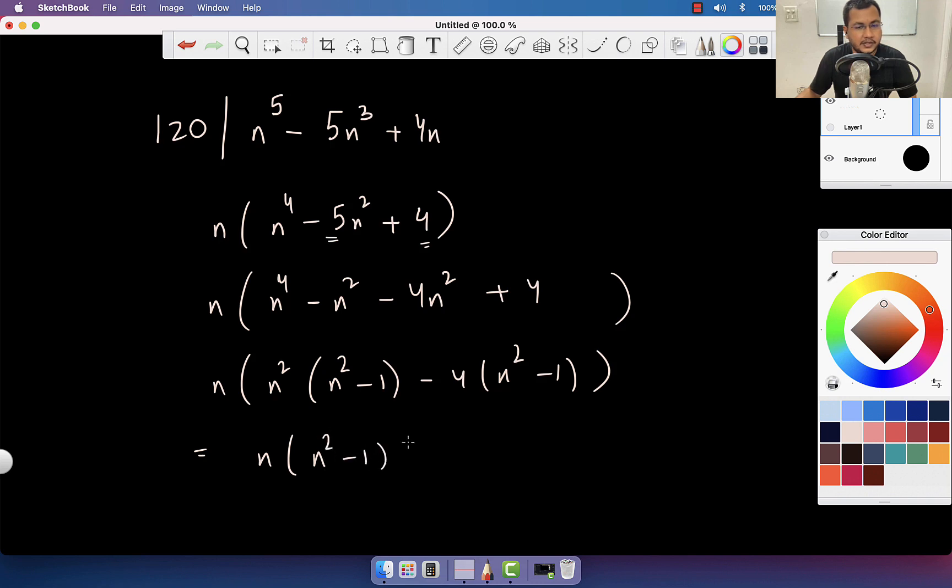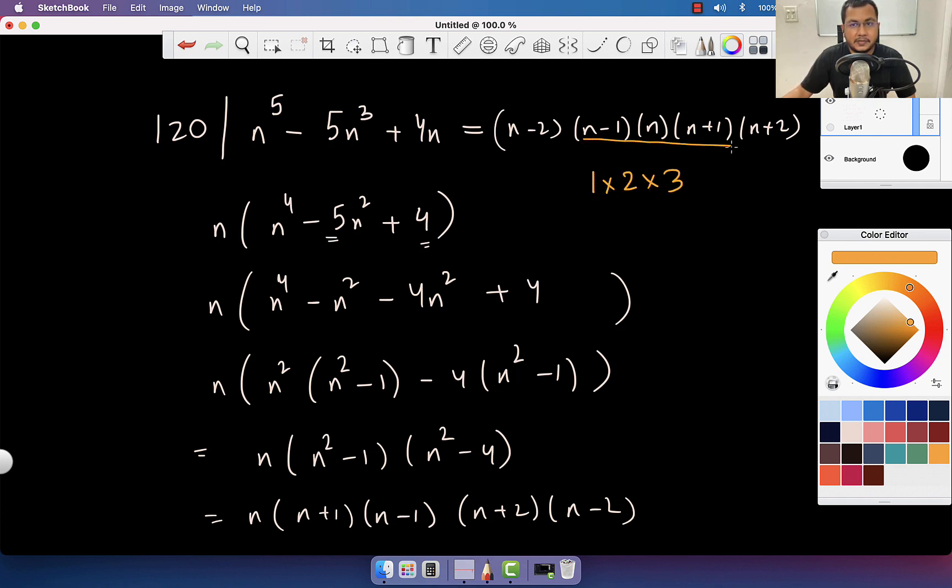And this is n, n square minus 1, n square minus 4, beautiful. This is n, n plus 1, n minus 1, n plus 2, n minus 2. Look at this, if I rearrange this, this is same as n minus 2, n minus 1, n, n plus 1, n plus 2. This is the product of 5 consecutive numbers. So, because these are 5 consecutive numbers, they are divisible by 5. And if I say 4 will be divisible by 4 and 3 and 2 and 1, we can say that this number is divisible by 120.